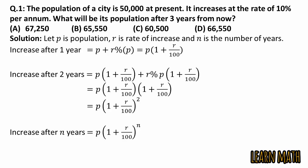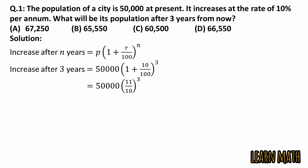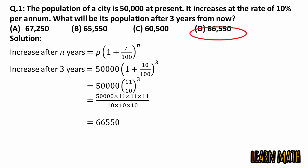Now we will use this formula to solve our question. Here p is 50,000, r is 10, and n is 3, because we have to find the population after 3 years. Putting the values in and simplifying: 10 divided by 100 is 1/10, taking LCM gives 11/10, and simplifying the cube gives us 66,550. Option D is the required answer.